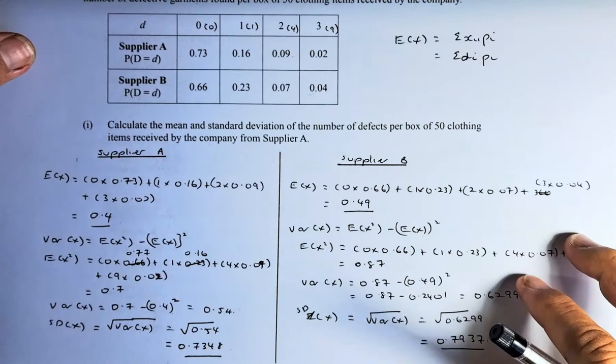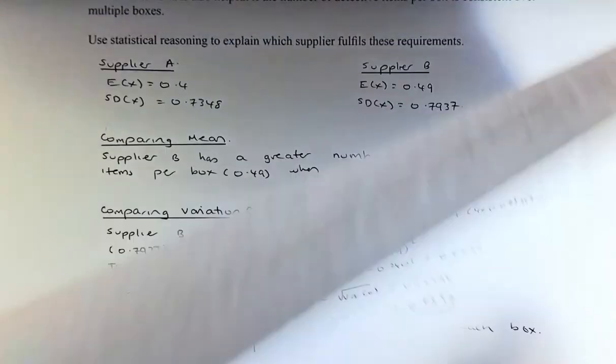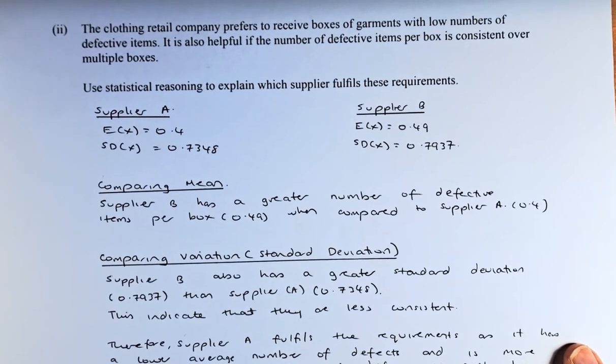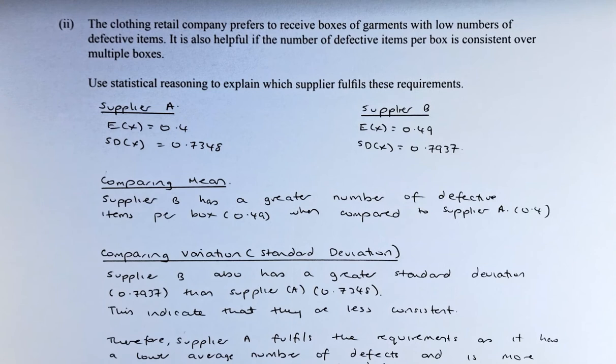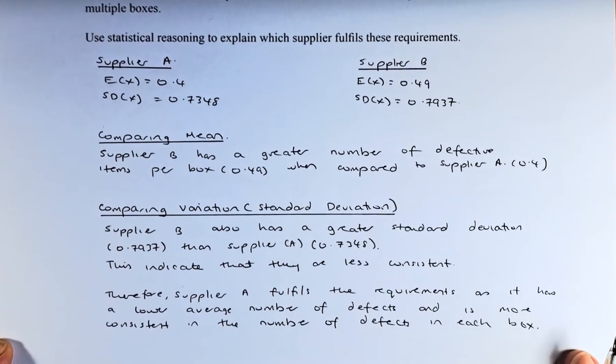Great. Hopefully you are following me. Now we shall read the question. The clothing retail company prefers to receive boxes of garments with low numbers of defective items. It is also helpful if the number of defective items is consistent over multiple boxes. Use statistical reasons to explain which supplier fulfills the requirement. We are going to bring it up a bit.